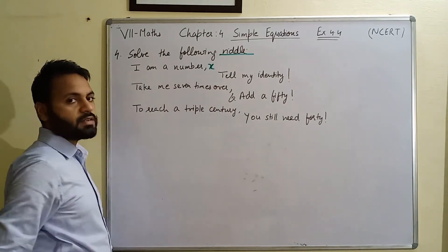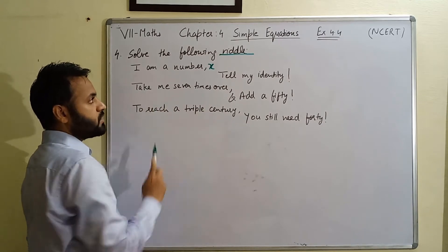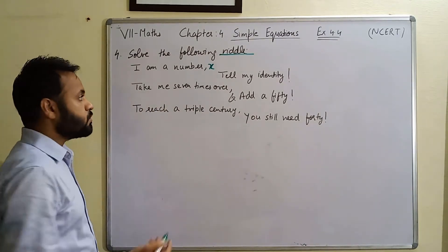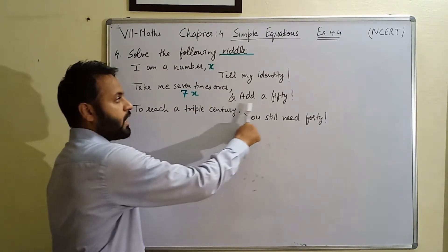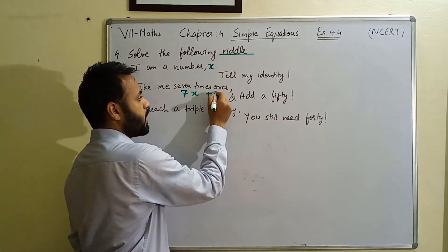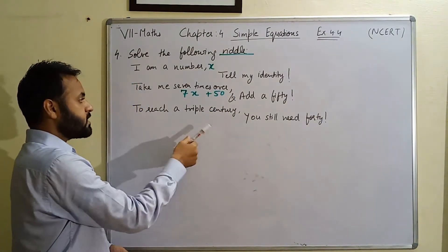So hum ne pehle this number ko x assume kar liya. And next it is written as take me seven times over. Now seven times over means we have to multiply this number by seven and add 50. Add 50 means we have to add 50 also.